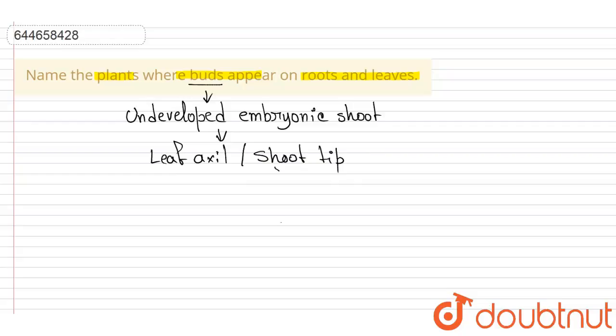Now in many cases, the buds appear in unexpected places like the trunks, roots, or leaves except these leaf axil or the shoot tip, and these buds are known as adventitious bud.